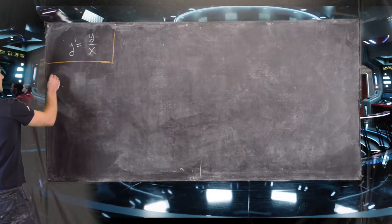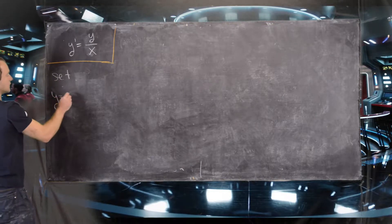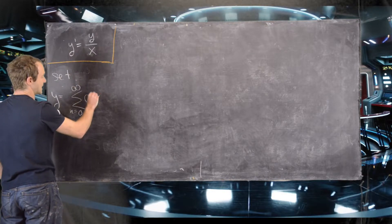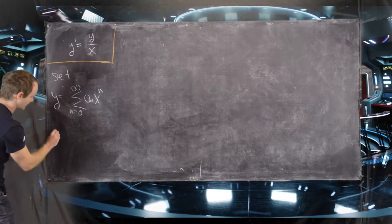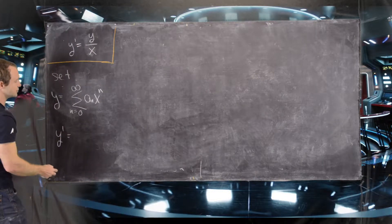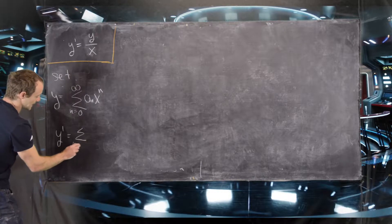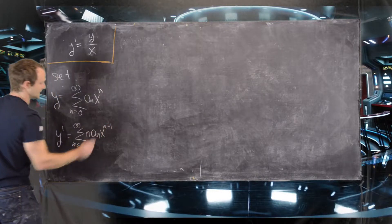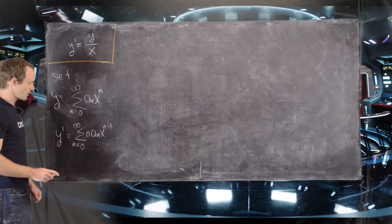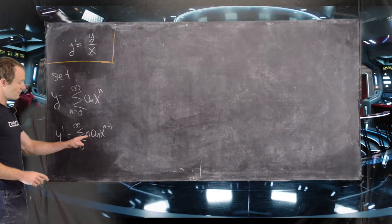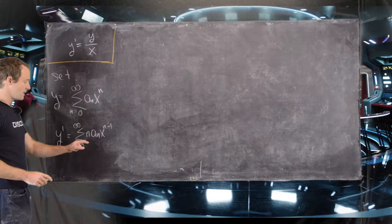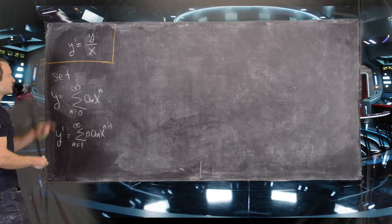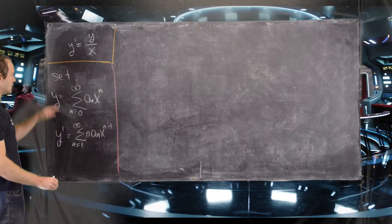Let's set y equal to some arbitrary power series: y equals the sum from n equals 0 to infinity of a sub n x to the n. Since this is a first order differential equation, we need its first derivative as well: y prime equals the sum from n equals 0 to infinity of n a sub n x to the n minus 1. Notice the zeroth term vanishes because of the factor of n, so we can change the lower limit from 0 to 1. This is our setup — we have these two series, the y prime series and the y series.